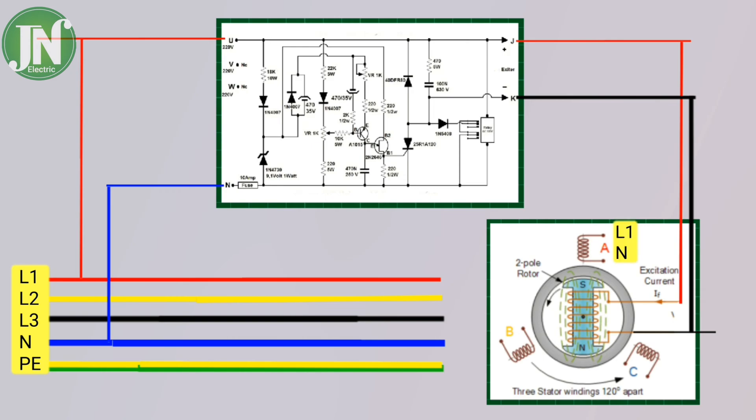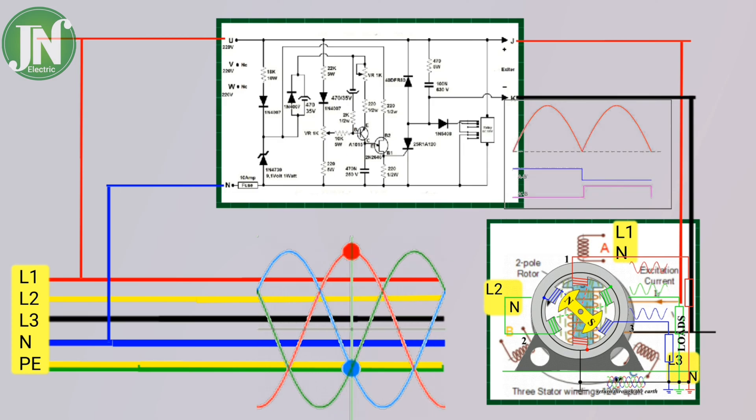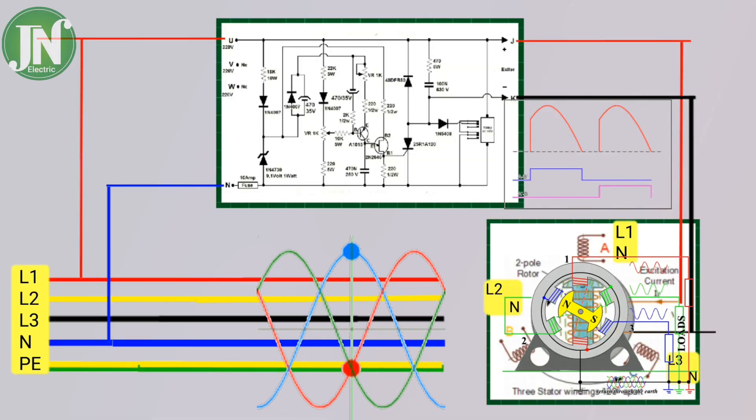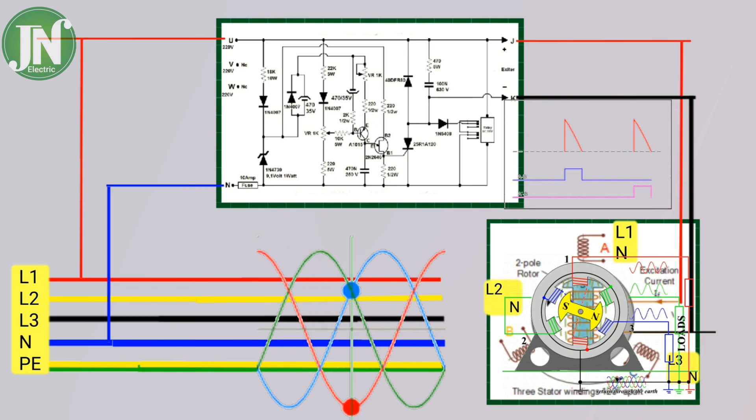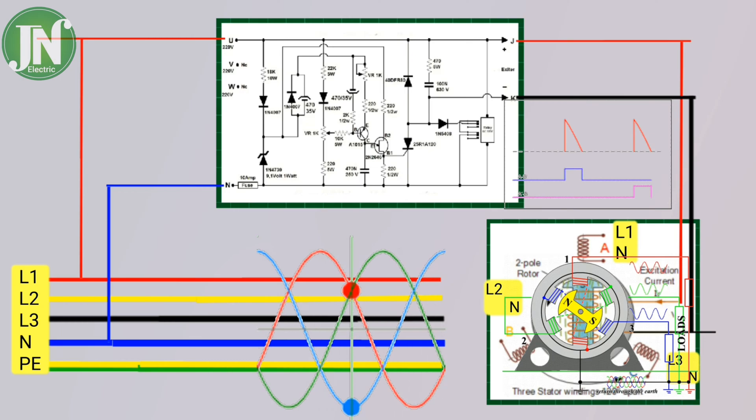This produces a low voltage DC signal that is proportional to the AC generator voltage. This actual DC signal is compared with a set DC value produced by the reference circuit of the zener diode and resistor.